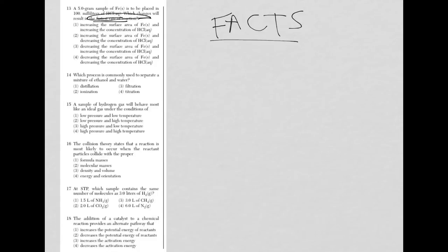Anytime we have more interaction between the reactants—in this case a solid, which is iron, and aqueous hydrochloric acid—the faster it's going to react. It turns out that increasing the surface area of the iron, for example grinding it up, and increasing the concentration of HCl, is your answer.